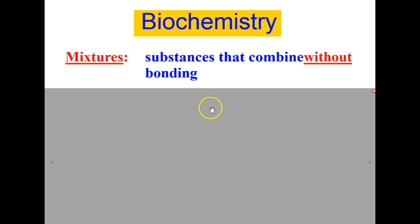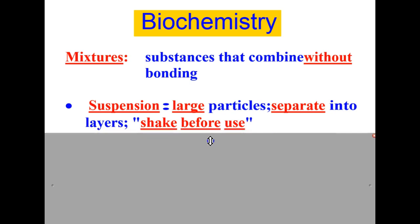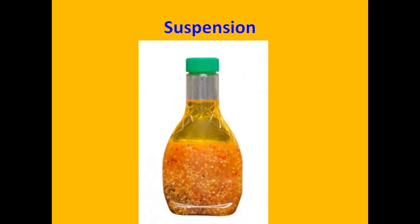Examples of mixtures include suspensions. Suspensions are large particles and they usually separate into layers. If you see a container that says shake before use, this is a great indication that that container holds a suspension, such as Italian dressing.